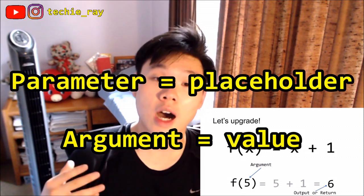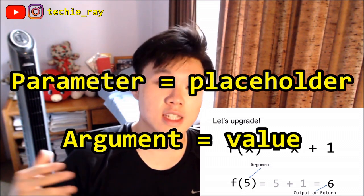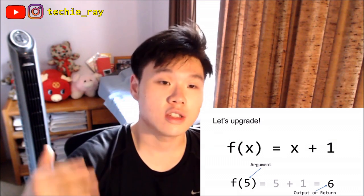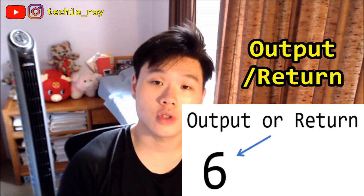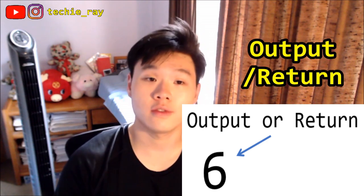Basically, the difference between a parameter and an argument is that the parameter is a placeholder while the argument is the value that substitutes the placeholder to therefore trigger the function. Finally, the answer 6 is called the output or the return of a function.